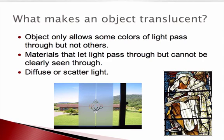Let's take a look at translucent. Translucent objects only allow some colors of light to pass through, but not others. Materials that let light pass through cannot be clearly seen through — they diffuse or scatter light. A great example is frosted glass: you can see the house clearly through the clear portion of the window, but in the frosted area that light is scattered or diffused, so it's not able to clearly pass through.